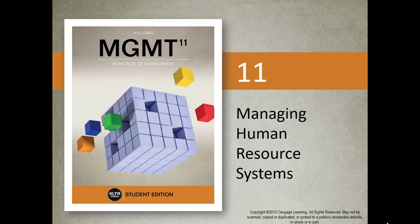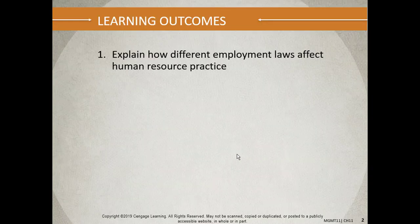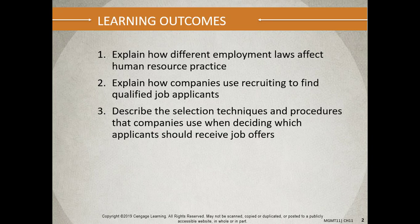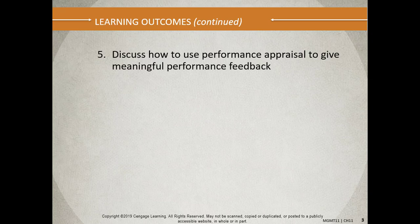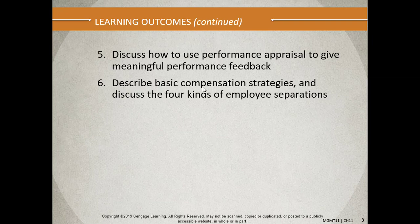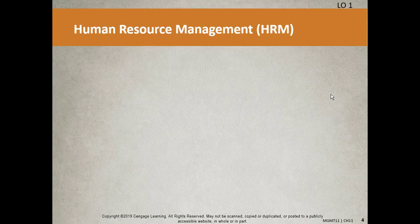Hi and welcome to Managing Human Resource Systems, Chapter 11. This is a big one and I'll try to keep it under an hour. Learning outcomes: we look at different types of employment laws, companies and how they recruit, the selection techniques and procedures for deciding who should receive job offers, how to determine training and using performance appraisals to give meaningful performance feedback, and the basic compensation strategies.